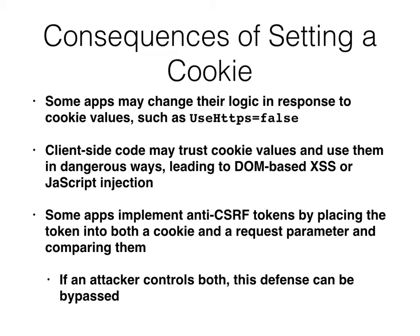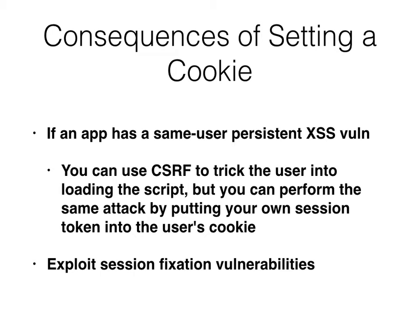So once you set a cookie, you can change your logic — like HTTPS equals false. Client-side code might trust cookie values and then use them to display things on the page, and then you've got DOM-based XSS or JavaScript injection. A lot of people put tokens in a cookie and into a CSRF parameter and compare them — so you can control both and defeat anti-CSRF tokens. If you have a persistent XSS flaw that only affects the same user, you feed the victim your cookie and now they're looking at your page and running your script.